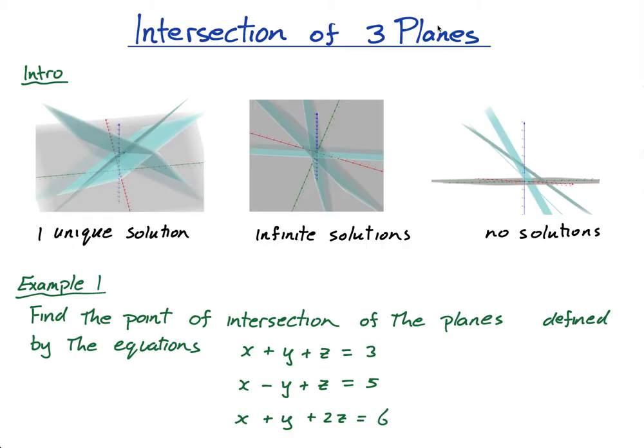There's lots of different situations where planes can have no solutions. Like imagine three planes are parallel, there's going to be no solutions. Or even two planes are parallel and one of them is not parallel. Or even, none of them are parallel, like this situation. But the line, this line here is actually parallel to this plane. So if this line is parallel to this plane, they won't all intersect together.